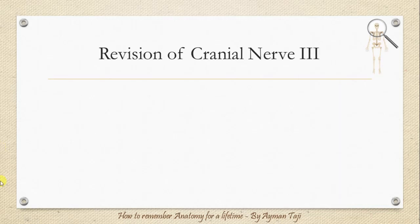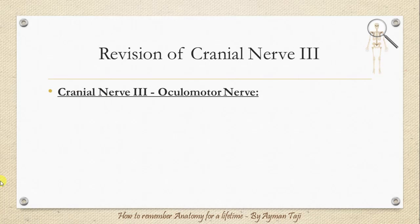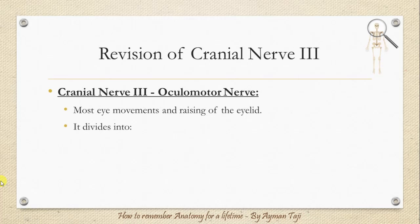We also need a quick revision of two cranial nerves. First, the third cranial nerve or the oculomotor nerve, which innervates muscles that enable most movements of the eye and raising of the eyelid. As the oculomotor nerve enters the orbit, it divides into a superior branch and an inferior branch.